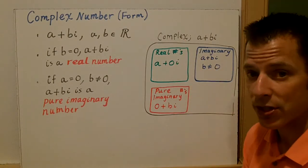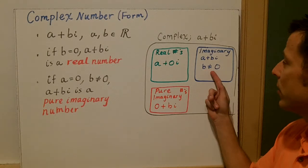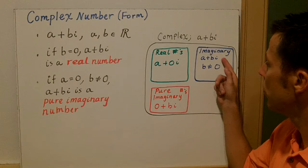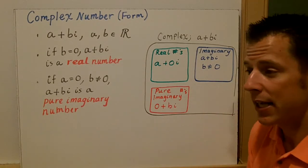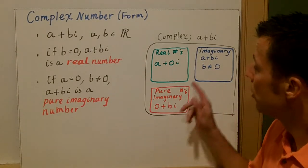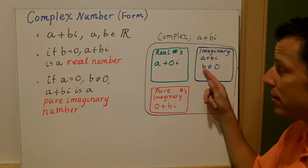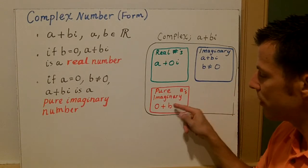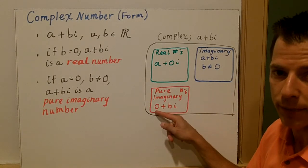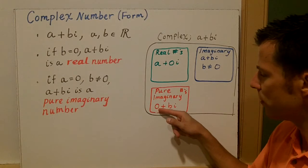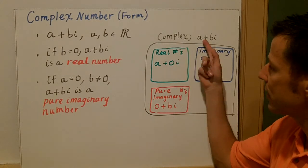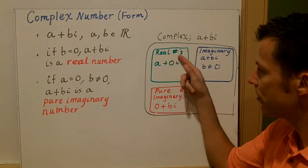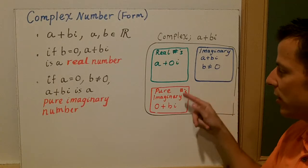You also have what's called the imaginary number. The imaginary number is when b doesn't equal zero — so you have an a and you have a b. Numbers like five plus three-i, negative two plus seven-i — those are imaginary numbers. Pure imaginary numbers are when your a value is zero, and that's just in the form zero plus bi. So the complex numbers are in the form a plus bi, and we really look at three types: real, imaginary, and pure imaginary.